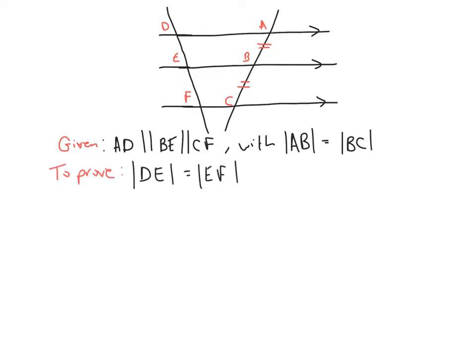What we're trying to prove is that the second transversal will be cut into equal segments as well. So if line ABC is split into equal sections, then our other line DF should be too. We're trying to prove that the distance between D and E equals the distance between E and F, given that AB equals BC.